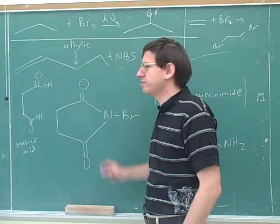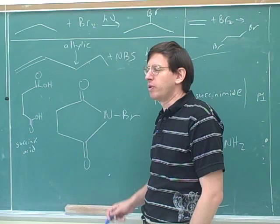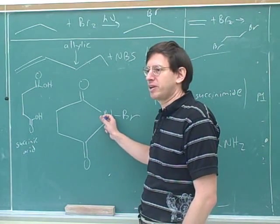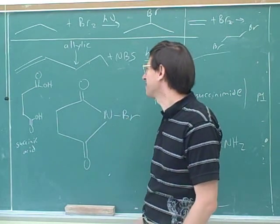We used an imide as a nitrogen deliverer, right, to avoid overalkylation for amines. Well, we're doing something a little bit similar here, except now we're using this as a bromine deliverer. We're using this imide to deliver the bromine.